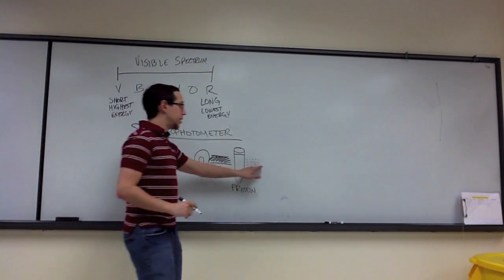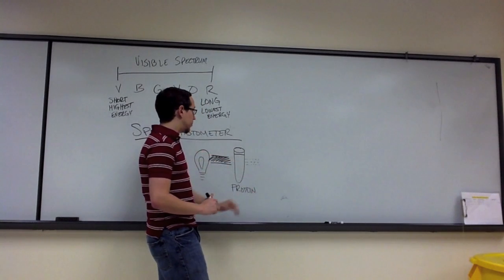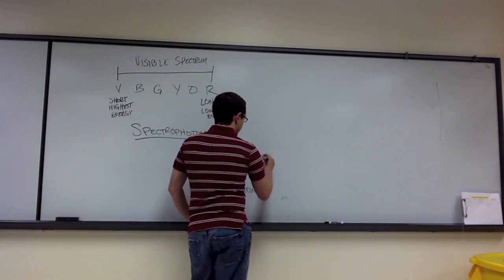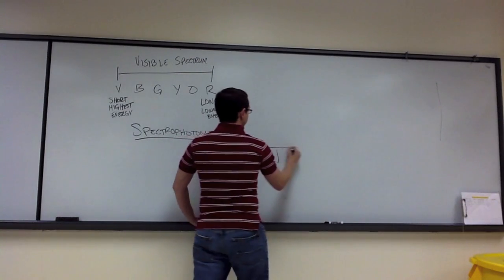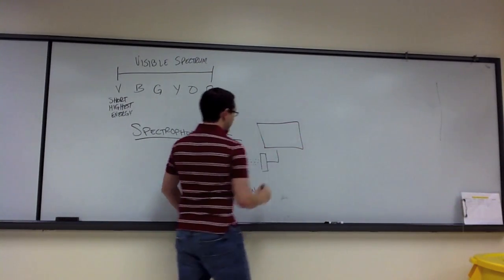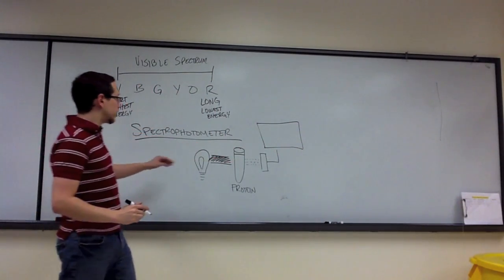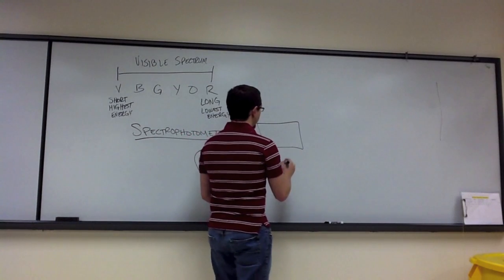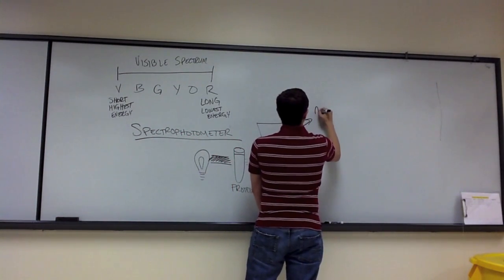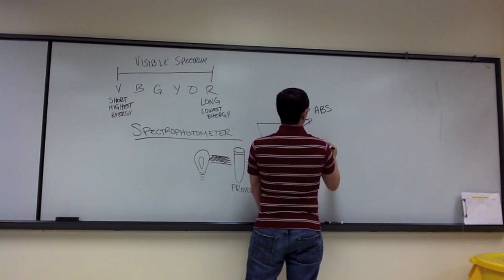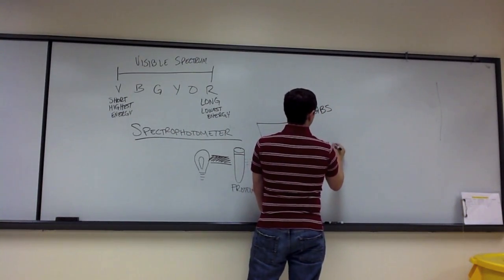And so the light that is transmitted passes through our sample. And it's going to be quantified by a meter. So this meter catches the light that does pass through, quantifies it, and that's going to tell us the amount of light that was absorbed and the percent of light that's transmitted.